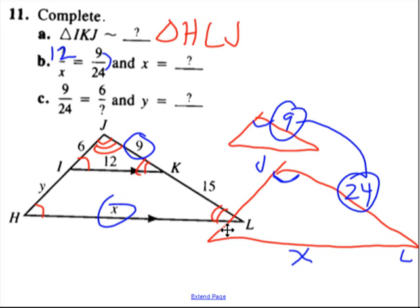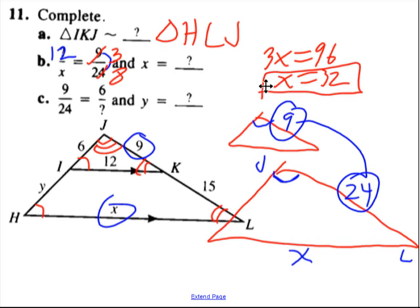And once you've got that, we can cross multiply and solve. If you want, you can simplify this fraction first. So 9 and 24 have a common factor of 3, so maybe I'll just make this a little easier on myself and divide the top and bottom by 3. So now when I cross multiply, I get 3X equals 12 times 8, which is 96. Divide, and I get that X is 32.